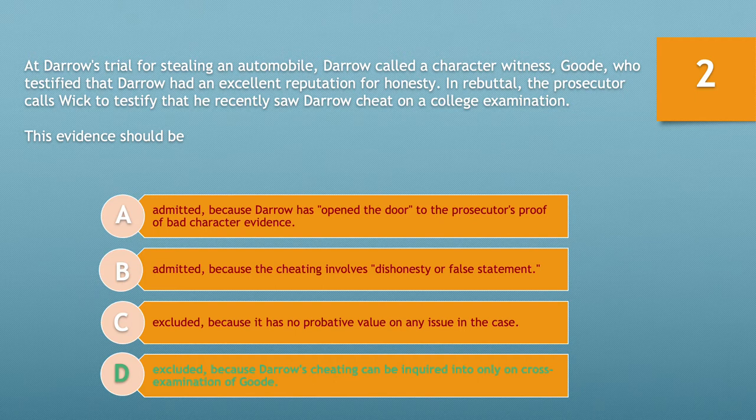Impeachment by this method is only allowed on cross-examination of the witness, not through extrinsic evidence. In this case, Darrow is on trial for stealing an automobile, which is a crime involving the character trait of honesty. The defense called Good to testify that Darrow had an excellent reputation for honesty, and the prosecution can offer pertinent character evidence to rebut by cross-examining Good and asking about a specific act of Darrow's misconduct, such as Darrow cheating on a college examination.